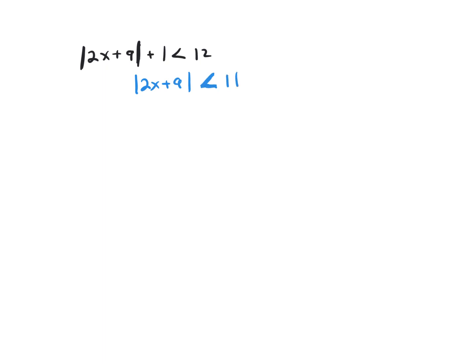Now since this is a less than, we need anything in the absolute value bar to take on the value anything in between 11 and negative 11. Because if this was negative 8, that expression inside, once you took the absolute value of it, it would be less than 11.